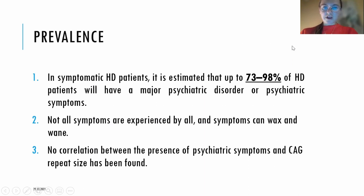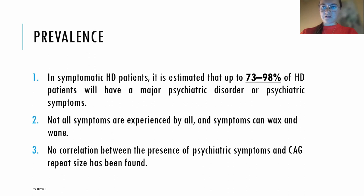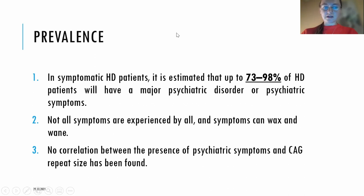When it comes to the prevalence of different neuropsychiatric symptoms in symptomatic HD patients, it is estimated that up to 73% but up to 98% of HD patients will have a major psychiatric disorder or psychiatric symptoms. Not all symptoms are experienced by all patients, and these symptoms can wax and wane with time. Importantly, there is no correlation between the presence of psychiatric symptoms and CAG repeat size whatsoever.